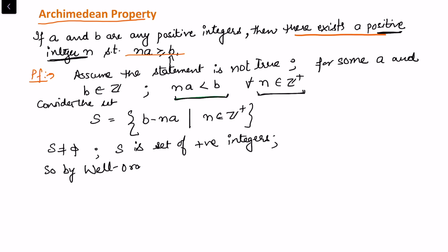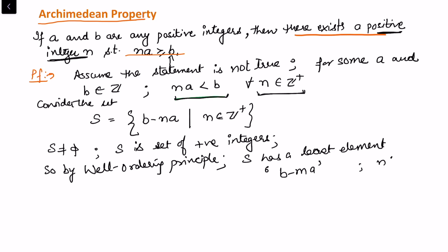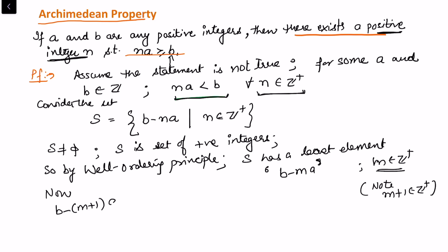By the Well-Ordering Principle, S has a least element. Let us select the least element as b minus ma, where m belongs to the positive integers. Now, considering that this is the least element and m belongs to the integers, we also note that whenever m belongs to the integers, m plus 1 also belongs to the integers. We can note that b minus (m+1)a equals b minus ma minus a.